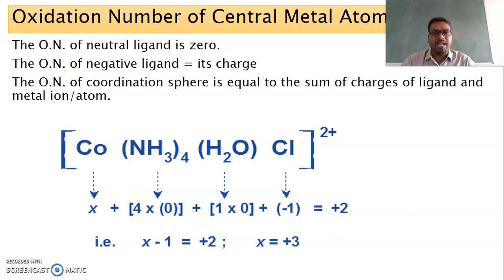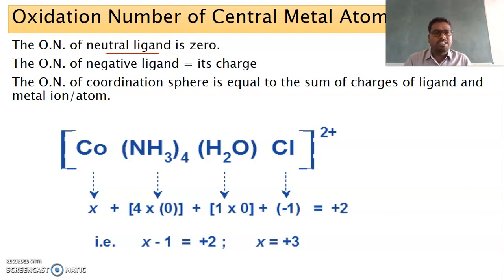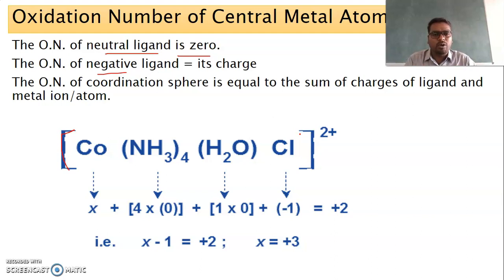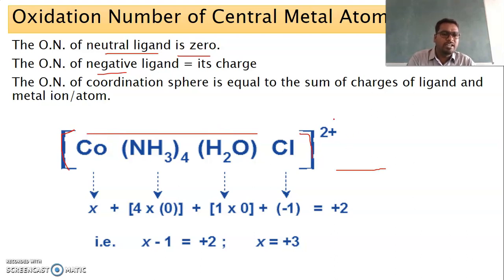The oxidation number of a neutral ligand is zero. The oxidation number of a ligand is equal to its charge: if it is a neutral ligand the charge is zero; if it is a negative ligand it is −1, −2, and so on. The species present inside the square bracket form the coordination sphere, and species outside are counter ions which neutralize the charge.